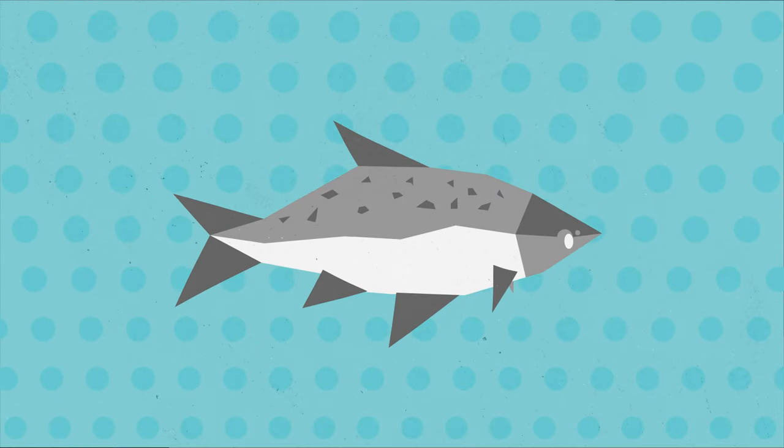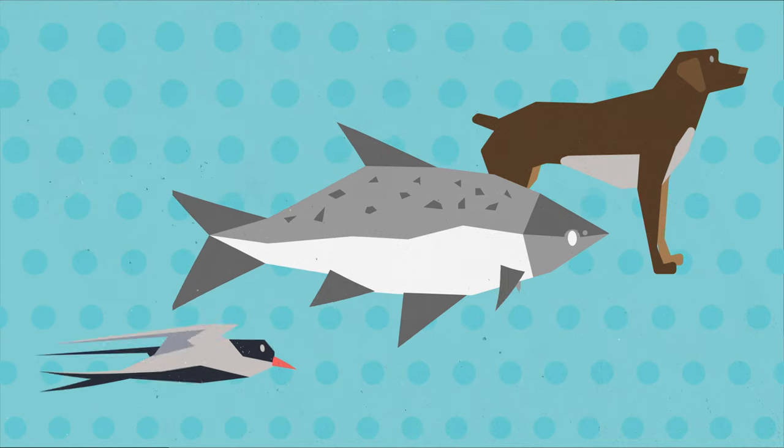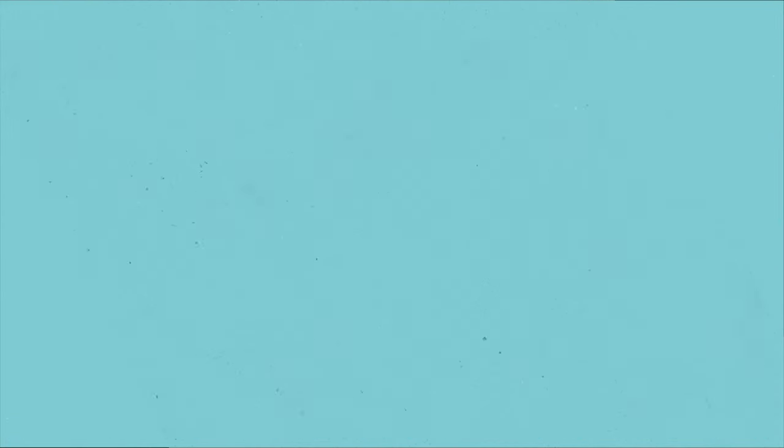The fact is, salmon have a lot in common with dogs and birds. While they don't have fur or feathers, salmon navigate in the same way.